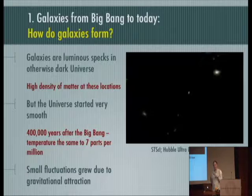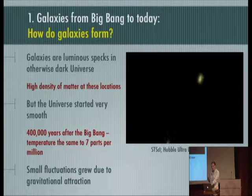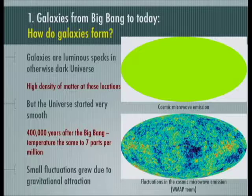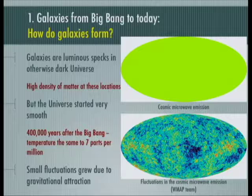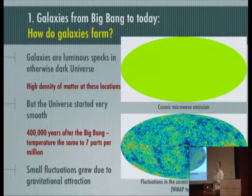Nowadays the universe is very highly structured, with very dense regions populated by luminous galaxies. You may have heard that after the Big Bang the universe started very smooth — we know this from observations of the cosmic microwave background, which is an echo of the Big Bang produced only 400,000 years after it. If you were to look at the cosmic microwave emission you would see something rather boring and smooth. So what they do is subtract off that smooth emission and reveal these small fluctuations — very small indeed, to the tune of a few parts per million.